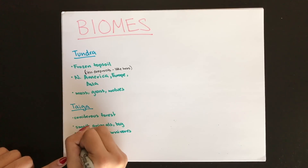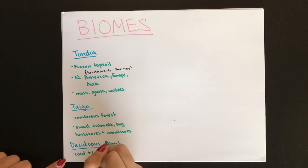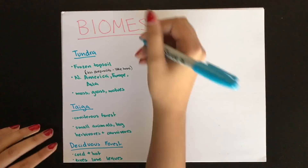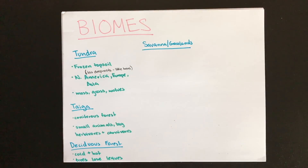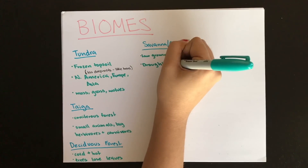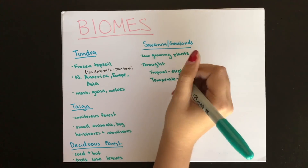The deciduous forest has distinctive seasons — a clearly defined hot season and a clearly defined cold season. Trees here lose their leaves in winter and regrow them in spring. The grasslands or savanna are characterized by low-growing plants, few scattered trees, and drought. They have large herbivores such as elephants. In both tropical and temperate savannas, fauna include bison and antelope.